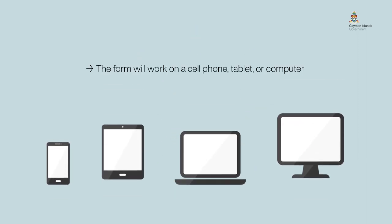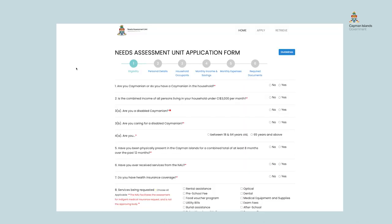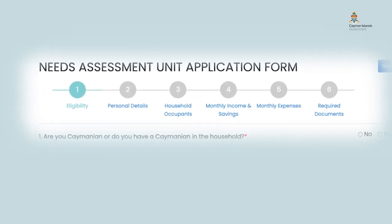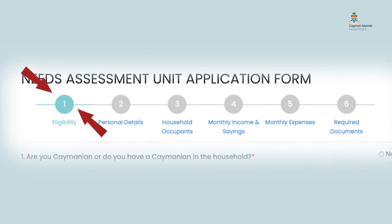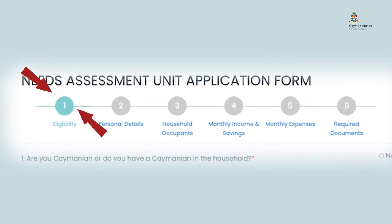The form will work on a cell phone, tablet, or computer. Whenever you see a red asterisk or star, that information is required before you can submit your application form. To complete your application, there are seven steps. These are displayed at the top of the application form and the blue circle will show where you are right now.